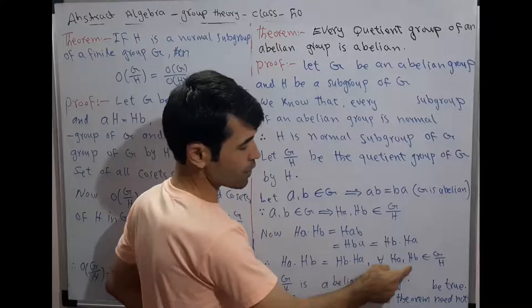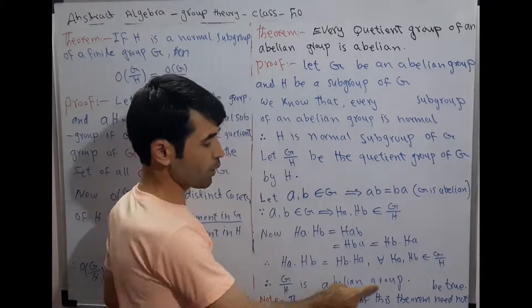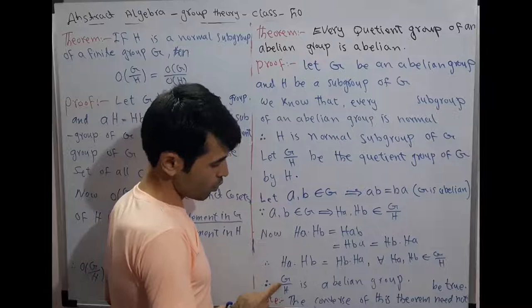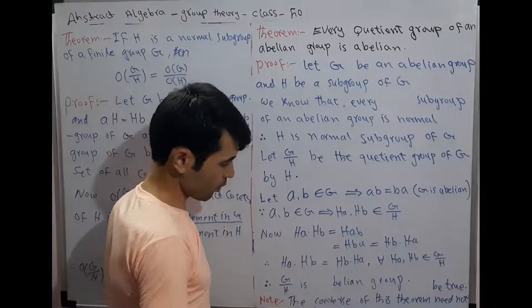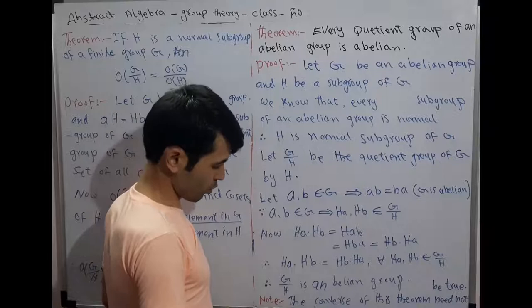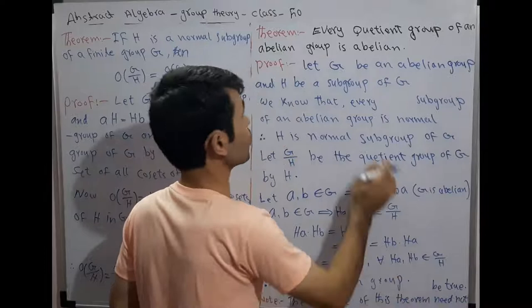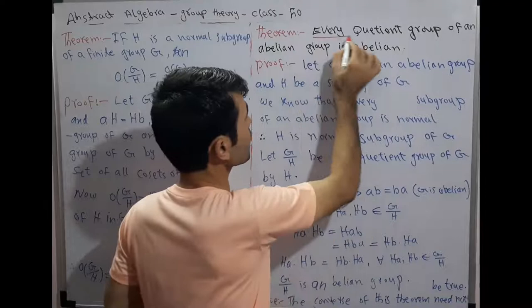Therefore G by H is an abelian group. We have proved that the quotient group G by H is an abelian group. The converse of this theorem is not necessarily true: if the quotient group G by H is an abelian group, it does not follow that G is abelian.